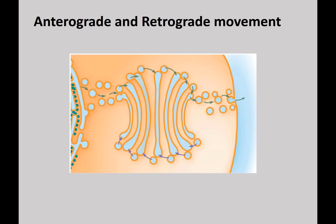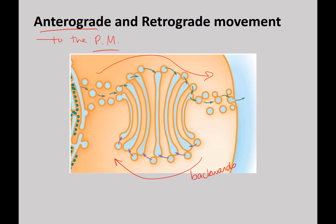There are two general types of movement. Anterograde means toward the plasma membrane. Retrograde means backwards — a protein with a KDEL signal goes retrograde back to the ER, while something being secreted goes anterograde. Keep this in mind because when we talk about the cytoskeleton we'll discuss certain proteins that move vesicles in the anterograde or retrograde direction.